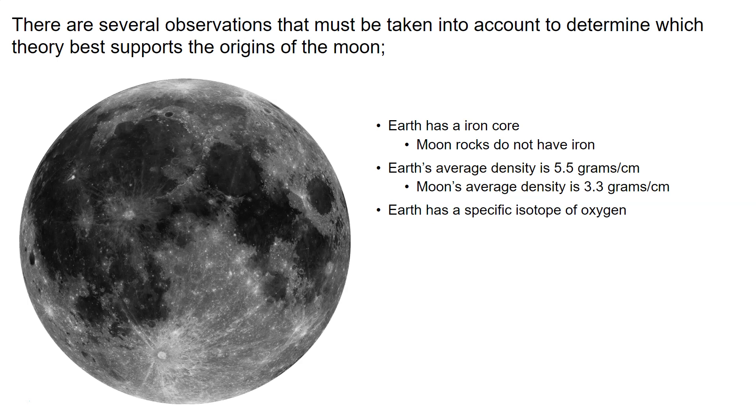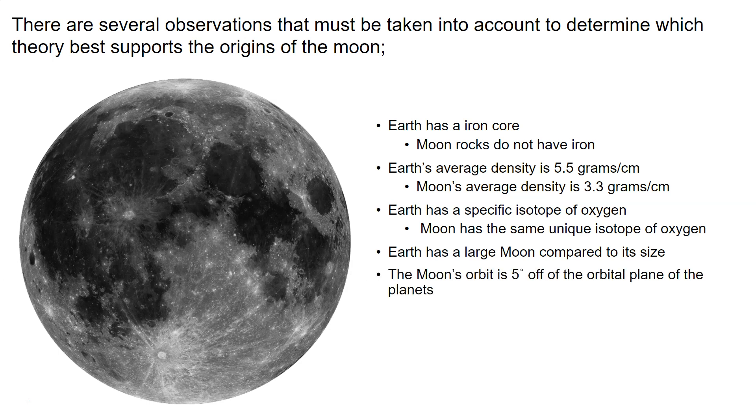Earth has a specific isotope of oxygen, and the moon has the same unique isotope. Earth has a large moon compared to its size. The moon's orbit is 5 degrees off the orbital plane of the planets. The moon is deficient in nitrogen and carbon, and moon rocks contain almost no water.